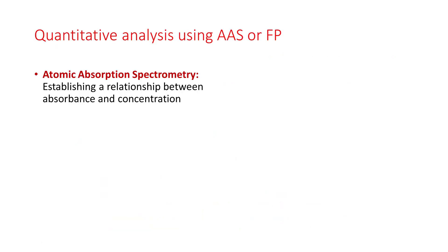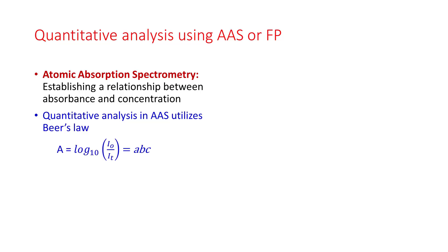Atomic absorption spectrometry establishes a relationship between absorbance and concentration. Quantitative analysis in atomic absorption utilizes Beer's law: A is equal to log of I0 by IT, which equals ABC, where small a is absorptivity, b is path length, and C is concentration.